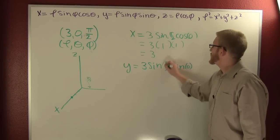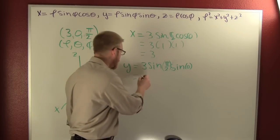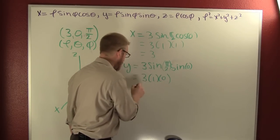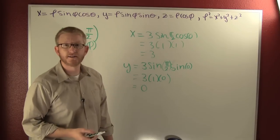So here we see we're gonna get 3 times 1 times 0, and the end result is nothing.